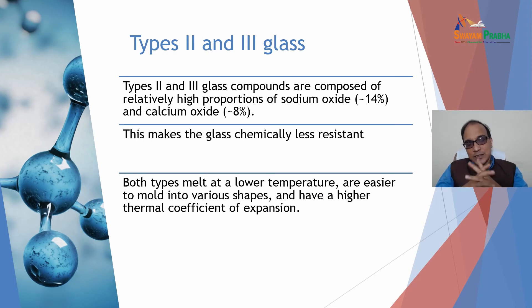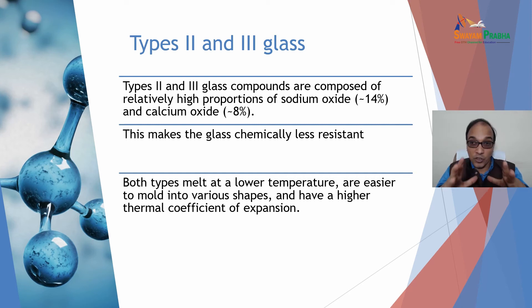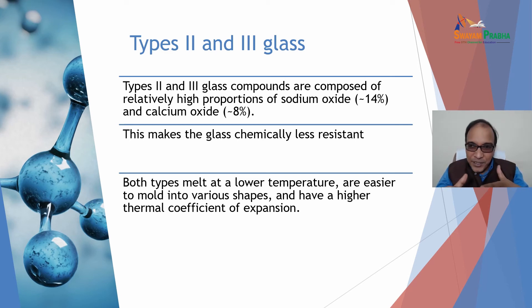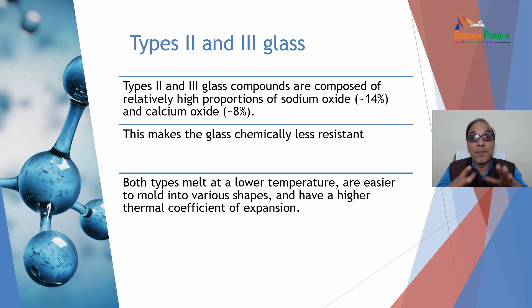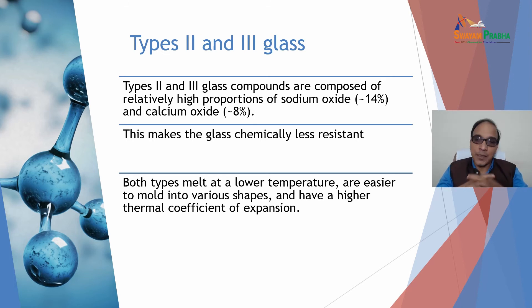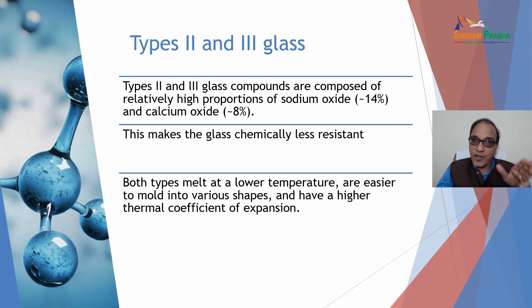Type 2 and type 3 glasses are composed of relatively high proportions of sodium oxide (~14%) and calcium oxide (~8%), making them chemically less resistant. Both types melt at lower temperatures and are easier to mold into various shapes; however, they have a high thermal coefficient of expansion, making them susceptible to cracking under thermal stress. That's why type 1 glass is more preferred for parenteral preparations and containers over type 2 and type 3.